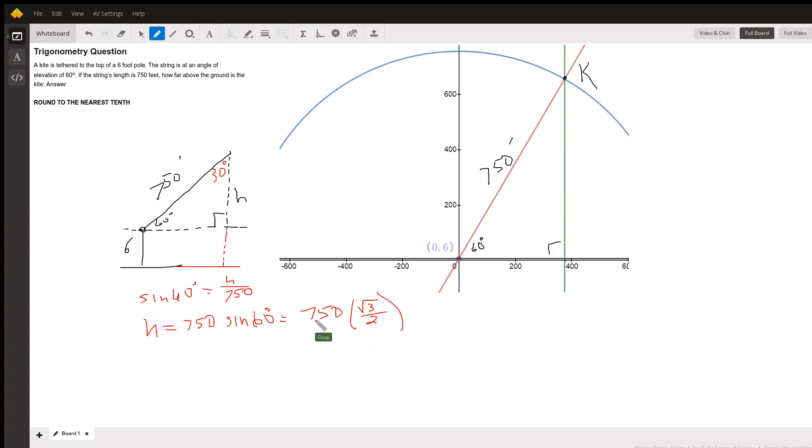And you can do that on a calculator. 2 goes into 750, what, 375. 375 times 1.732 will be your decimal approximation, but the key is that we have to, to get this total distance above the ground, we have to add 6 to that answer. So your answer is 6 plus 375 times the square root of 3.